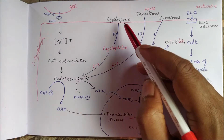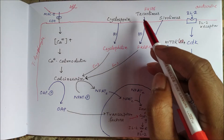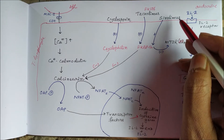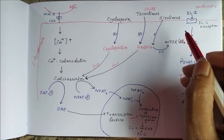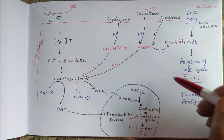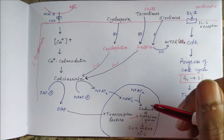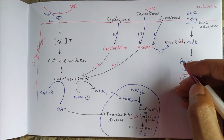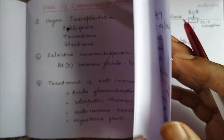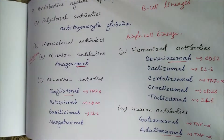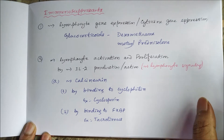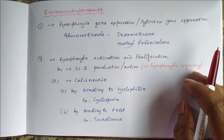Namaskar. Today we will study the mechanism of action of cyclosporine, tacrolimus, and sirolimus. Sirolimus is also known as rapamycin. All of them inhibit either interleukin production or interleukin action — mainly interleukin-2 production or action — and they inhibit lymphocyte signaling. The T lymphocytes have a role in the specific immune response.